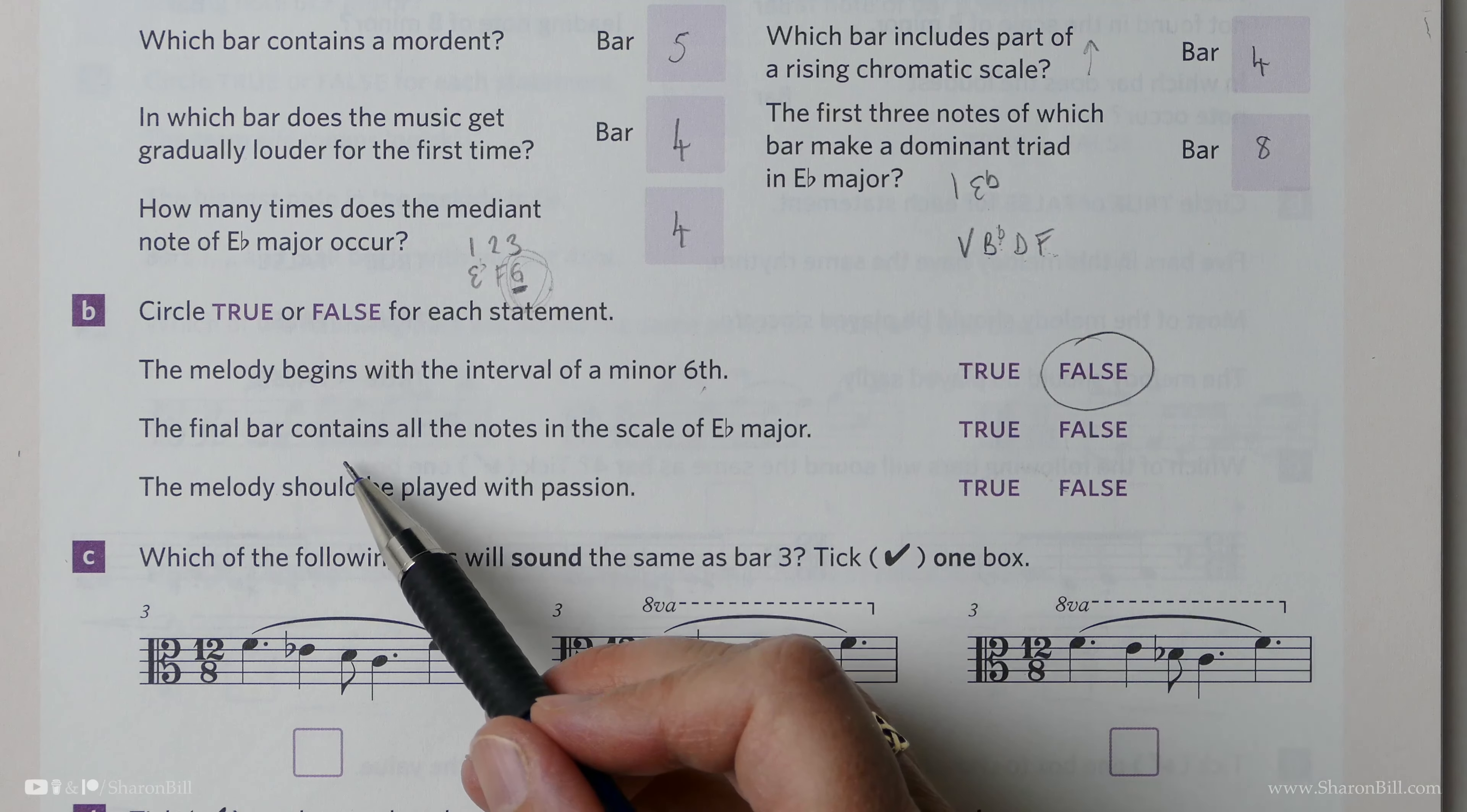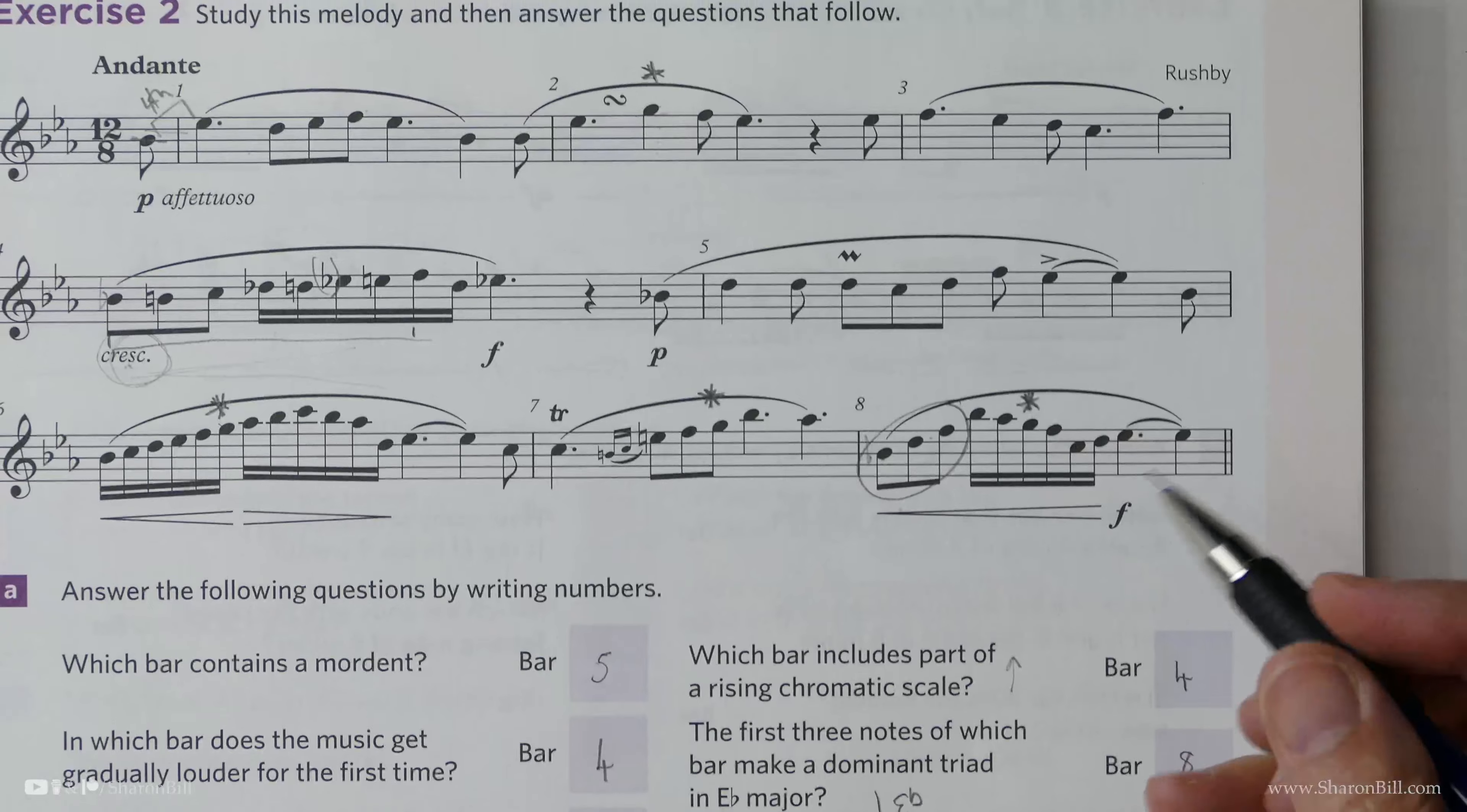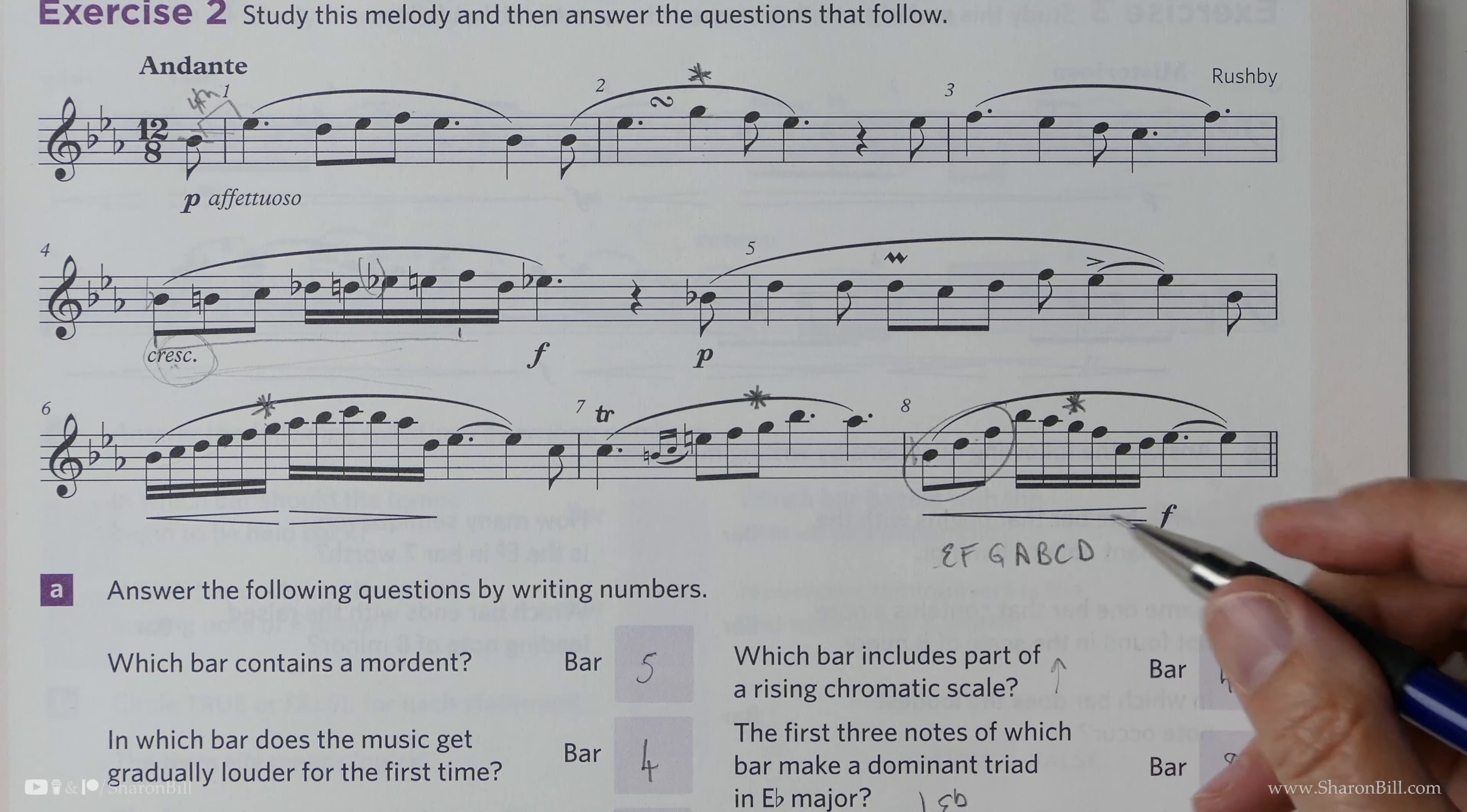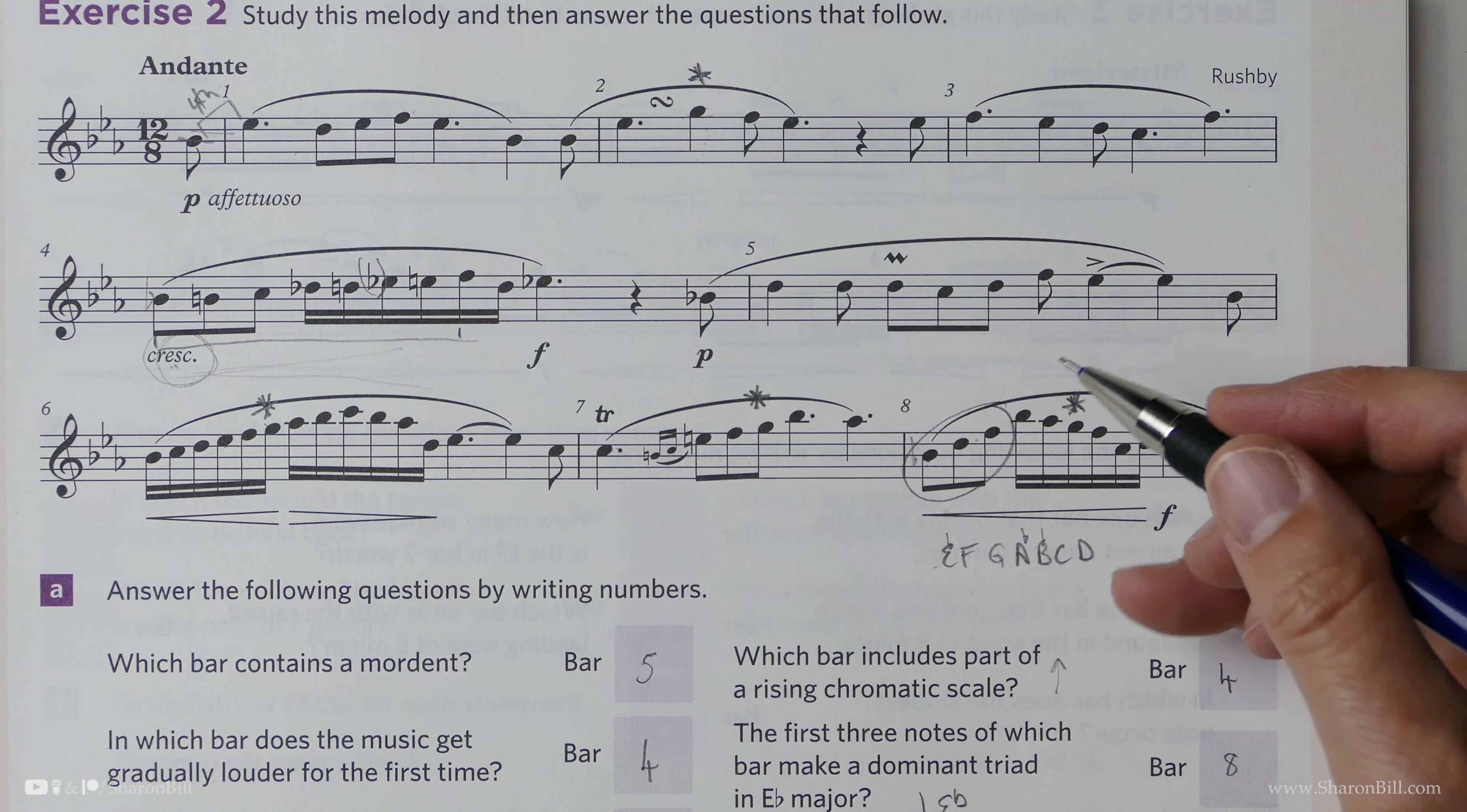Is it true or false that the final bar contains all the notes in the scale of E-flat major? So let's look at that final bar. So all of the notes of the scale would be E, F, G, A, B, C, D. We don't need to write E again. Of course, it will be B-flat, E-flat, and A-flat, but your key signature will deal with that. Let's see what we've got.